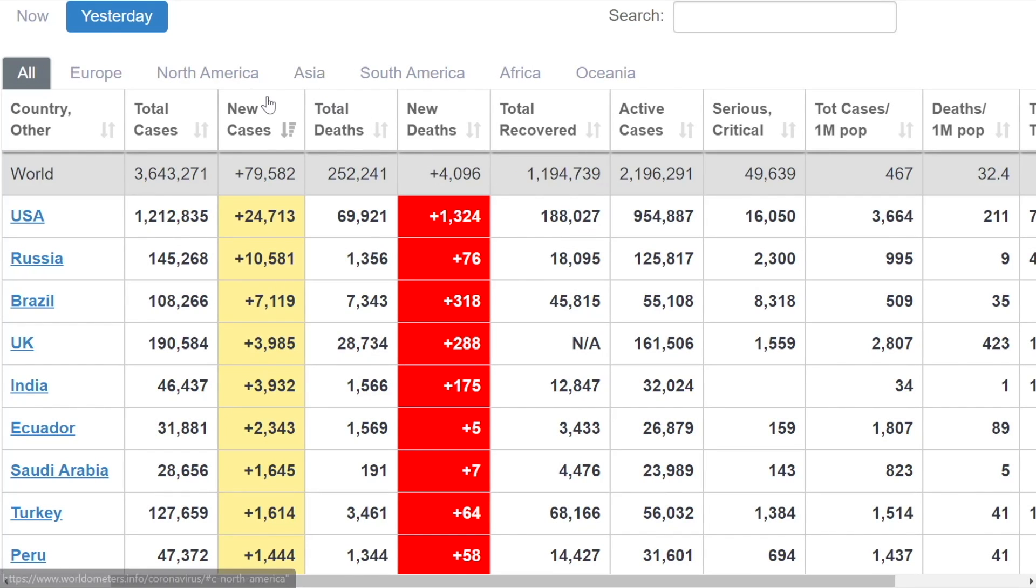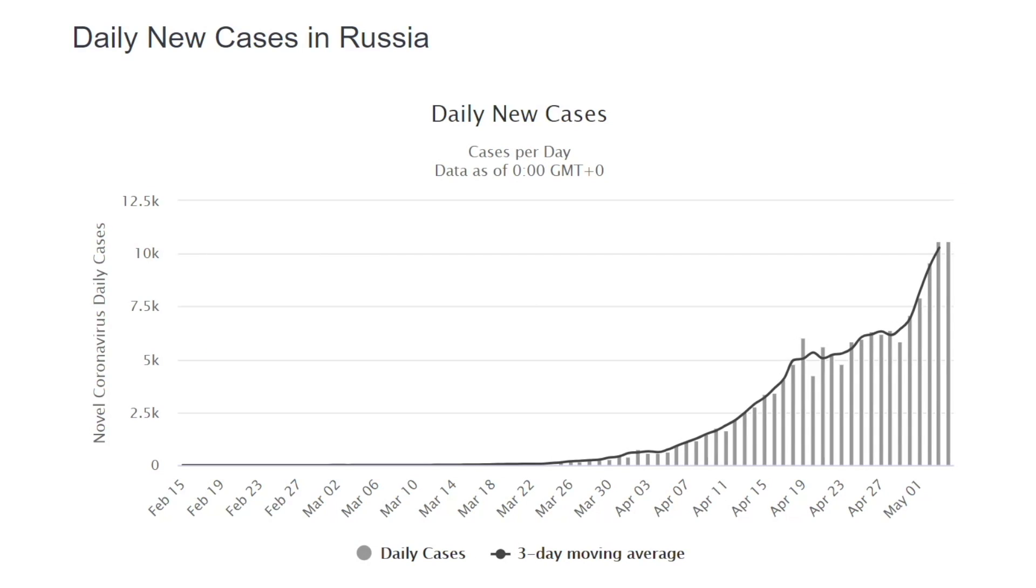In terms of new cases, United States still tops the list, but it's followed by Russia, and then Brazil, and then the UK, and then India. We're starting to see a different pattern here. As we can see, new cases in Russia is really starting to take off.